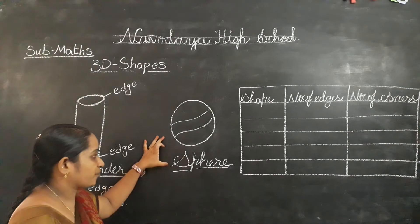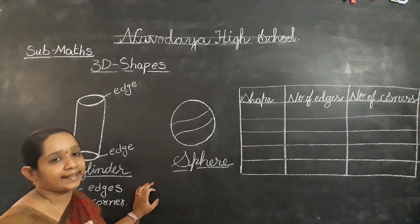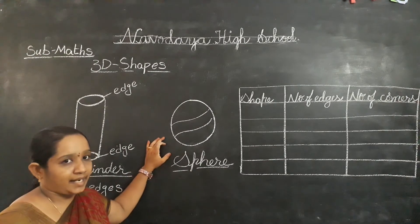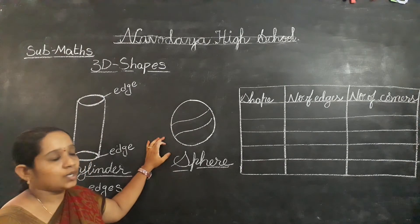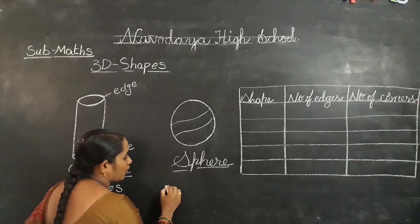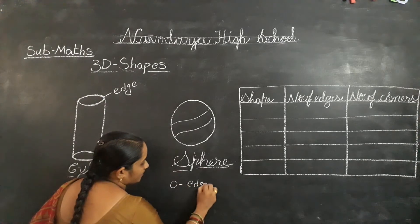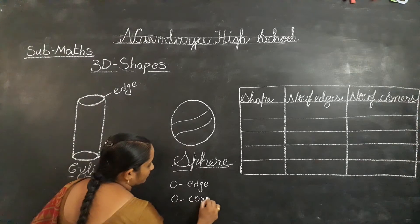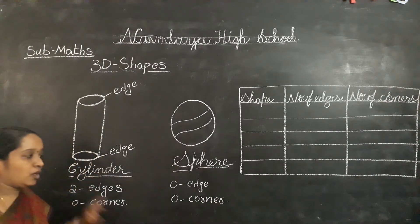Next is sphere. Do you know a ball? A ball looks like a sphere. A sphere does not have any edges or any corners — zero edges, zero corners.